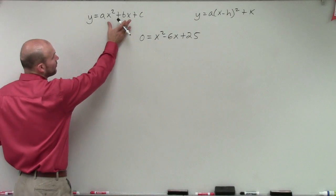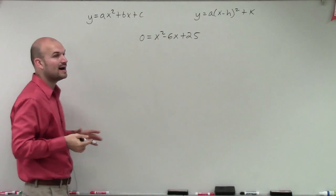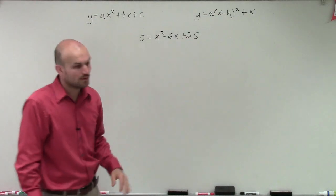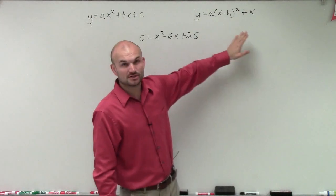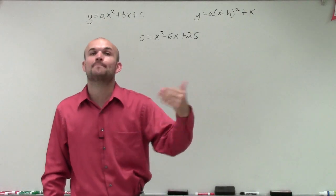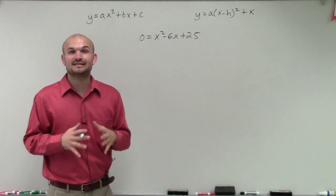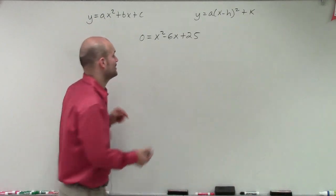However, in this form, we have two x's that we cannot combine, and therefore we cannot isolate them. So here's our equation. So what we need to do is we need to create a binomial squared. So to do that, I need to create a perfect square trinomial. So what we need to do is we need to find the value c that's going to create a perfect square trinomial.